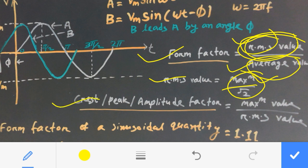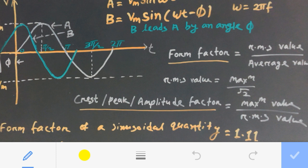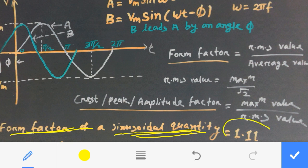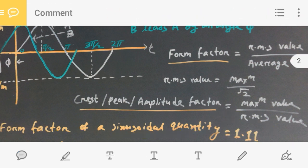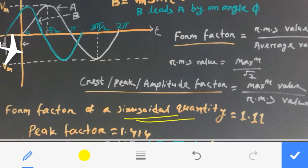Similarly, crest factor or peak or amplitude factor is equal to the maximum value divided by the RMS value. That is the ratio of maximum value to the RMS value. For a sinusoidal quantity, the form factor can be calculated as 1.11. Similarly, the peak factor for a sinusoidal quantity is 1.414.